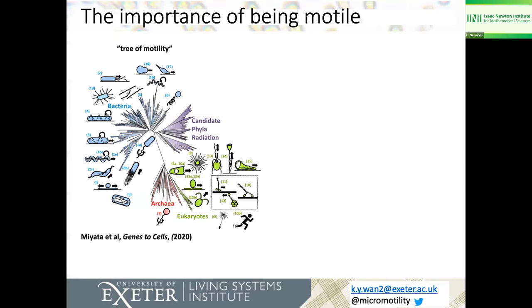Recently I came across this review paper. You may have heard of a tree of life, but maybe you haven't heard of a tree of motility. This is quite a remarkable paper where these researchers did a comprehensive survey of all the possible motility mechanisms that exist on Earth. Some of these you may be familiar with, such as bacterial motility, but there are more exotic mechanisms such as how organisms glide on surfaces. And of course there are also eukaryotes — I like how in proportion, eukaryotes are down here and humans are just tiny, tiny bits of this massive space.